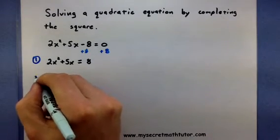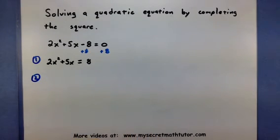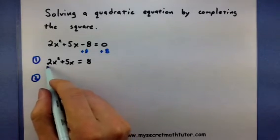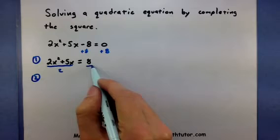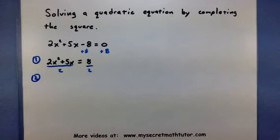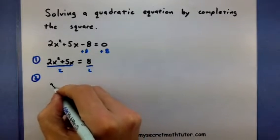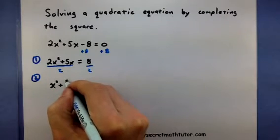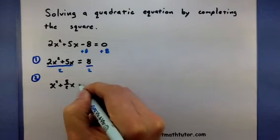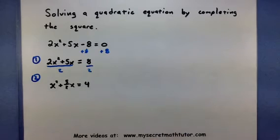Step two, I want to see if there's any numbers, coefficients, in front of x squared. If there are, I want to divide. So since I have this 2, I'm going to divide both sides of my equation by 2. This will give me an x squared plus a 5 halves x equals 4. So things aren't looking too bad.